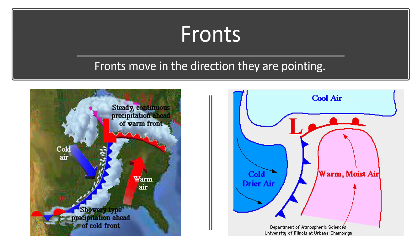Cold dry air is dense, so it has a tendency to sink. Warm moist air is buoyant and has a tendency to rise. Warm moist air is pushed up and over the cool air north of the warm front.